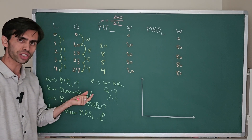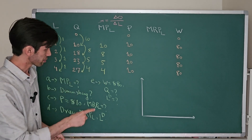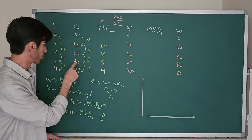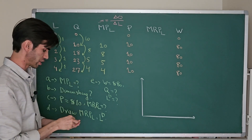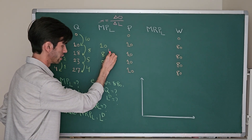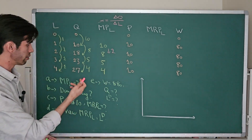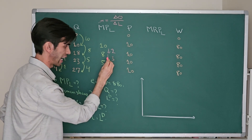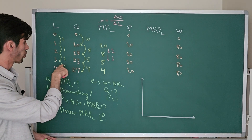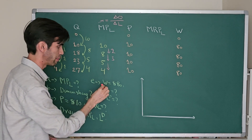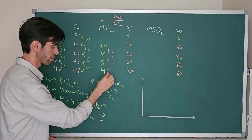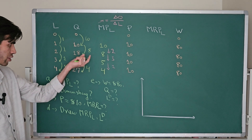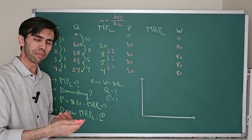Part B: do you observe the law of diminishing marginal return? Yes, exactly. When you hire the first worker, the marginal product of labor is 10. By hiring the second worker, it declines from 10 to 8 — a reduction of 2. Moving from 2 to 3 workers, it declines from 8 to 5 — a reduction of 3. Moving from 3 to 4 workers, it declines from 5 to 4 — a reduction of 1. So we do observe the law of diminishing marginal return, because as we hire more labor, the marginal product of labor is declining.